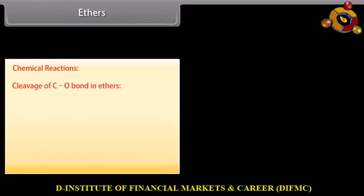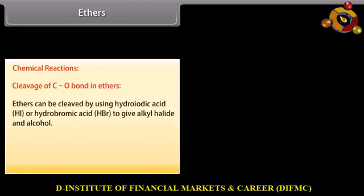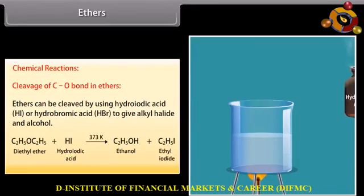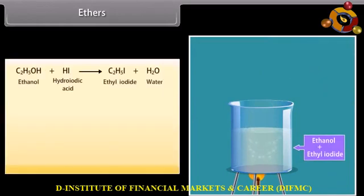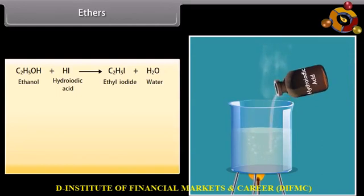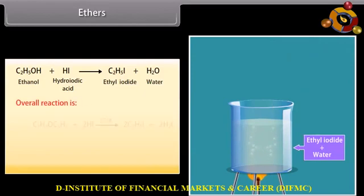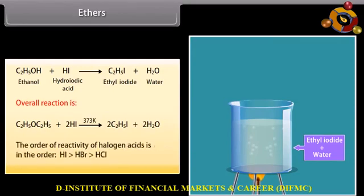Chemical reactions of ethers — cleavage of C-O bond: ethers can be cleaved by using hydroiodic acid or hydrobromic acid to give alkyl halide and alcohol. Hydroiodic acid reacts with diethyl ether to form ethanol and ethyl iodide. With excess hydroiodic acid, the alcohol formed further reacts to form ethyl iodide. Overall, hydroiodic acid reacts with diethyl ether at 373 K to form ethyl iodide and water. The order of reactivity of halogen acids is: HI, then HBr, then HCl.